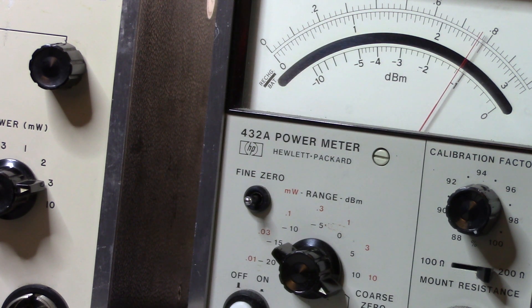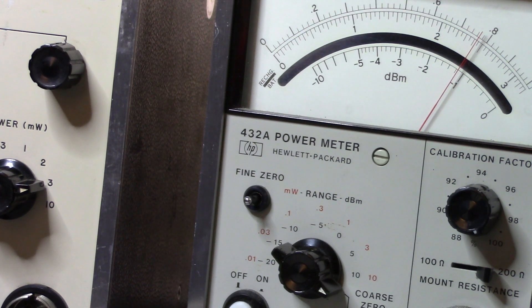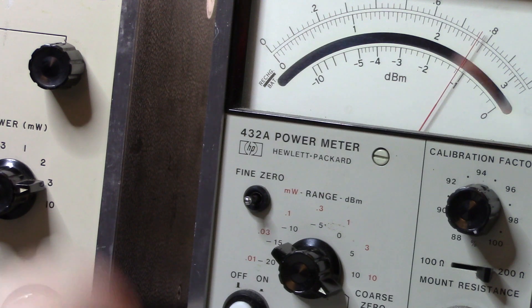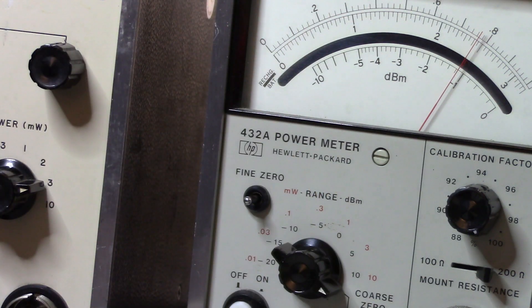There you go, that's just a quick example of using the 8477A calibrator to calibrate or at least do a performance measurement on a 432A power meter. If you found that interesting, give me a thumbs up in the video and I'll catch you again later. Bye.